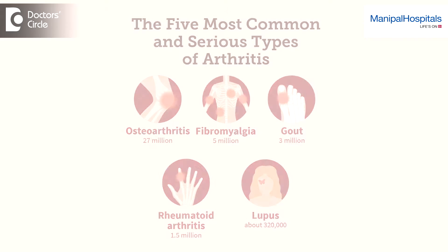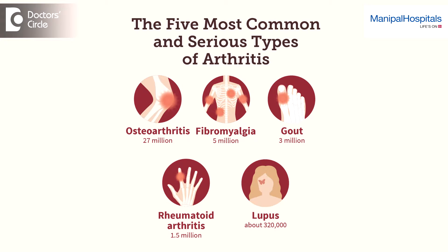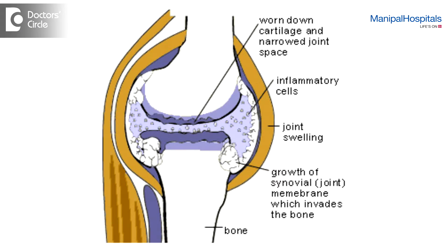There are more than 150 types of arthritis. Broadly, arthritis is divided into three types: inflammatory arthritis, degenerative arthritis, and crystal arthritis. In inflammatory arthritis,